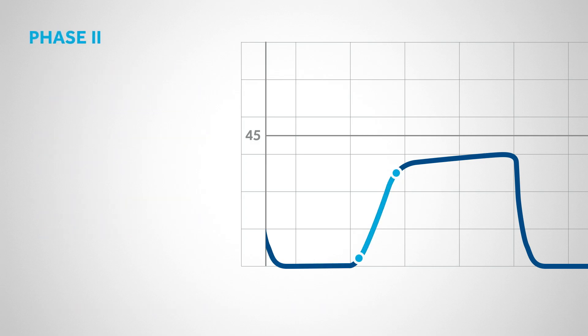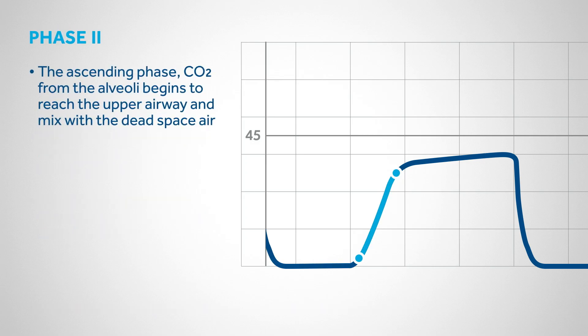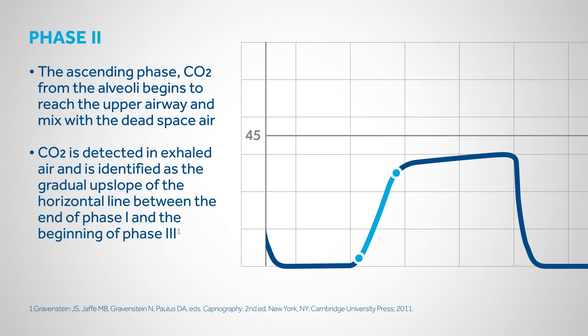In Phase 2, the ascending phase, CO2 from the alveoli begins to reach the upper airway and mix with the dead space air. This causes a rapid rise in the amount of CO2 now detected in exhaled air, and is identified as the gradual upslope of the horizontal line between the end of Phase 1 and the beginning of inhalation, or Phase 3, of the respiratory cycle.